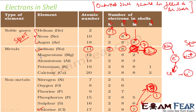But metals like sodium, since they have only 1 extra electron, just lose it to become stable. Chlorine needs only 1 electron, so it reacts more. Sulfur needs 2 extra electrons, so it reacts a little less. Phosphorus needs 3 extra electrons, so it reacts even less.